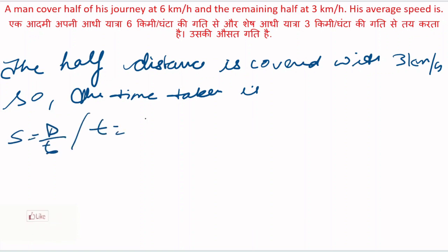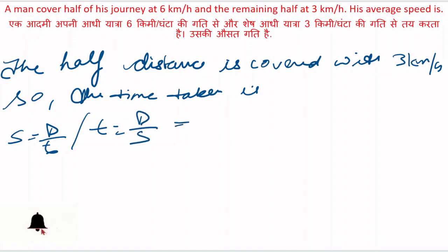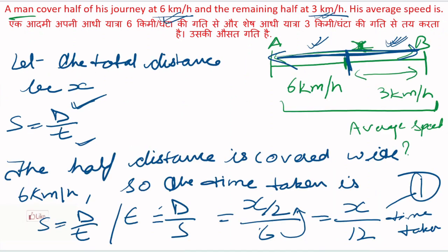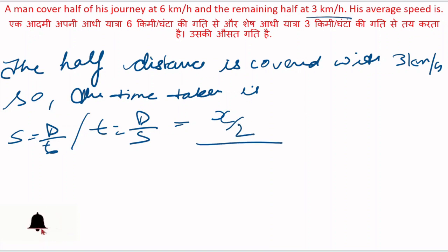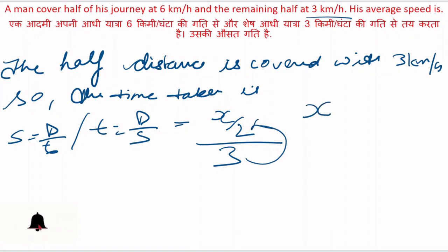Time is equal to distance by speed. The remaining half distance is x by 2. So x by 2 divided by speed 3 km per hour — this is equal to x by 6.